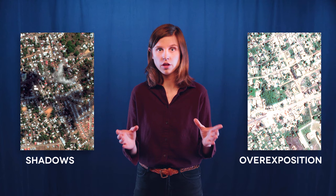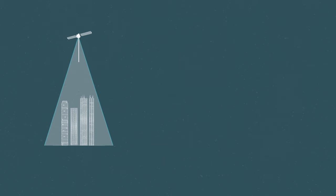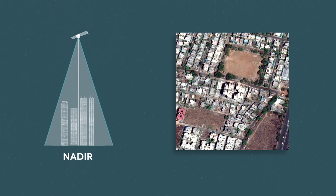Last thing: when the satellite looks down at the Earth, and when the line between the sensor of the satellite and the center of the image makes a right angle with the ground surface, we say that the satellite is at nadir. This is the position of the sensor where you will get the best resolution. But what happens if the orientation of the sensor changes? Then the resolution won't be as good as at nadir.